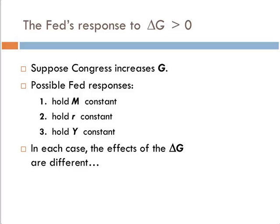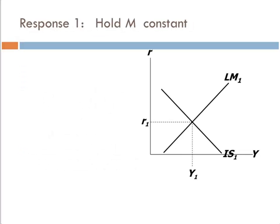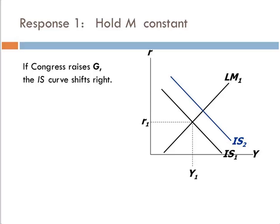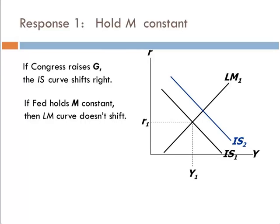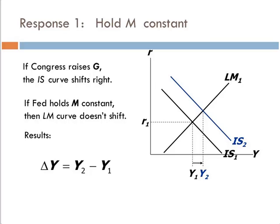First, if Congress raises G, the IS curve shifts to the right — we've seen that in the previous lecture. If the Fed holds monetary policy constant, we see a higher level of output at a higher interest rate, but not quite at the 1 over (1 minus MPC) times delta G that the Keynesian cross predicts. Why? Because the increase in interest rate also lowers investment.